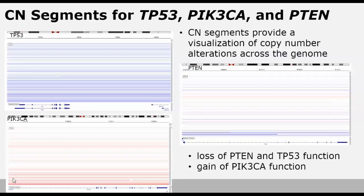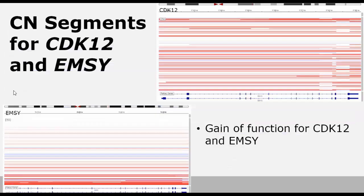Here are the CN segments for TP53, PIK3CA, and P10. These CN segments provide a visualization of the copy number alterations across the genome. Blue regions represent deletions, light pink represents low-level gains, and deeper red represents amplifications. TP53 and P10 were shown to have a loss of function, while PIK3CA, which encompassed mostly low-level gains and amplifications, exhibited a gain of function. CN segments for CDK12 and MZ both had a majority of low-level gains and amplifications, also exhibiting a gain of function.